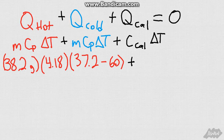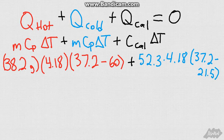We are then going to add our cold water. So our cold water is going to have a mass of 52 grams, according to our problem, 52.3 grams. And we are going to use the same specific heat constant, the 4.18. And what was our final temperature? Our final temperature was the 37.2. And we are then going to subtract the 21.5.